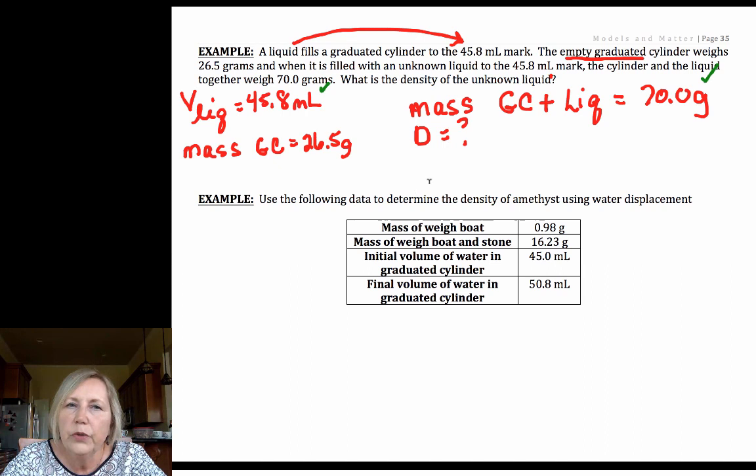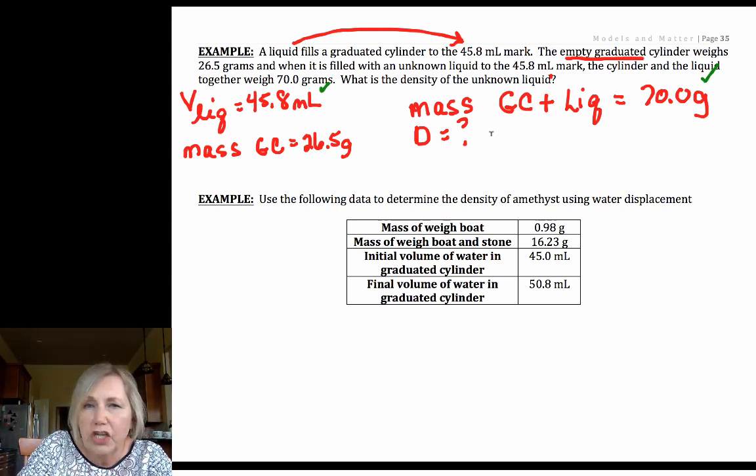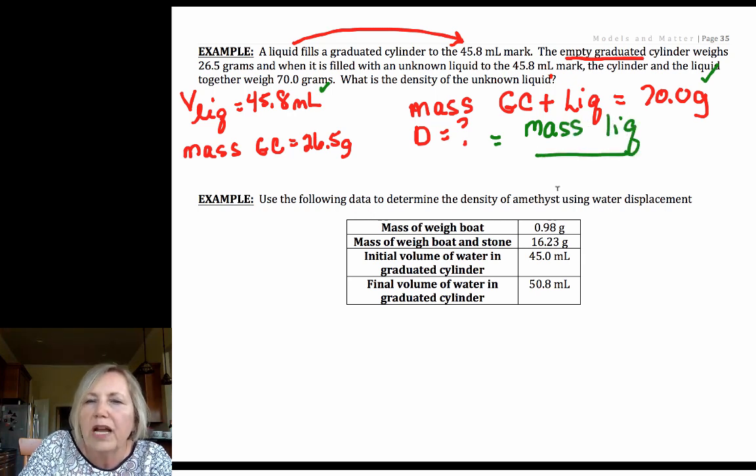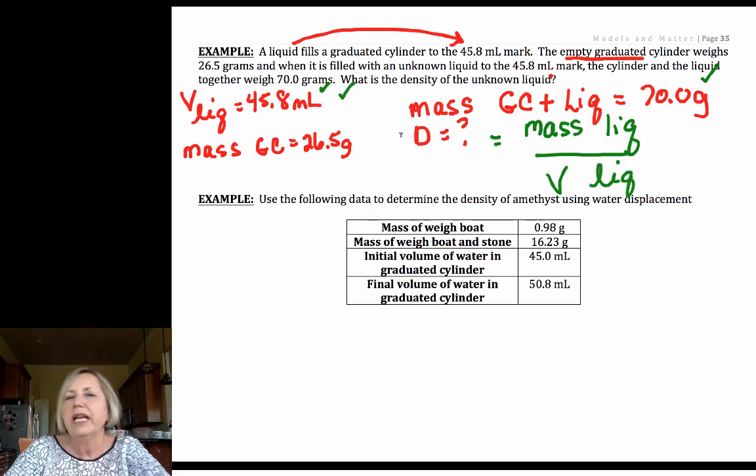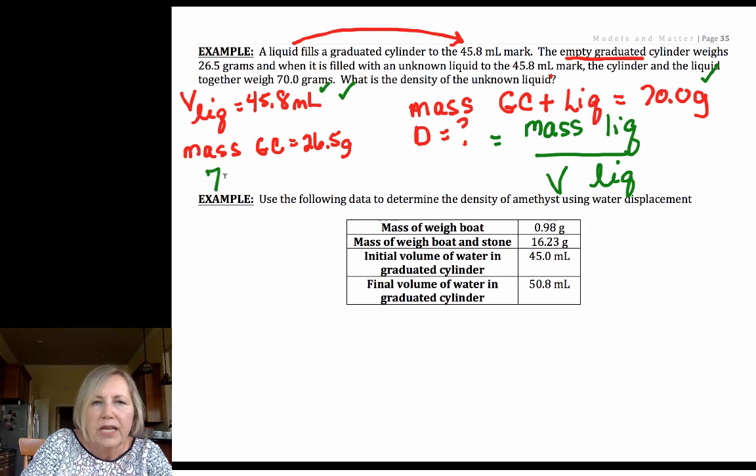Now many of you are going to look at this and right away see, since we listed our givens this way, that I need to do a calculation. So to do my density, I need my mass of my liquid alone over my volume of my liquid alone. I have my volume but I don't have my mass of my liquid alone. Most of you immediately intuitively see, well, to get my liquid I have to take away the graduated cylinder. So I have to take 70 minus 26.5.